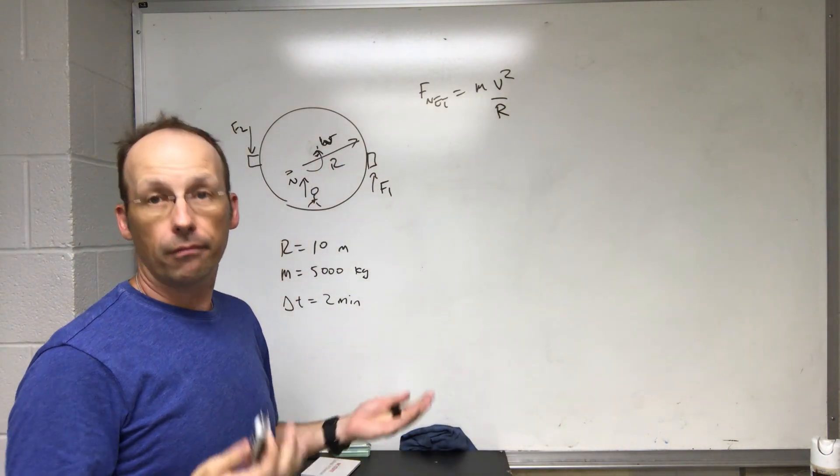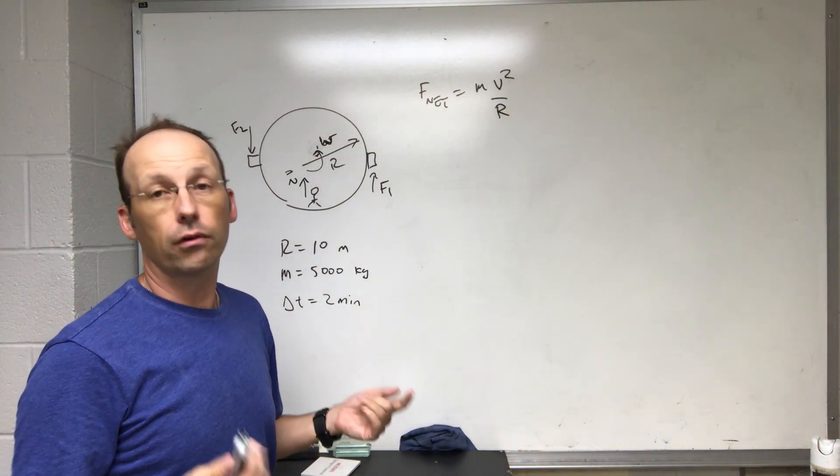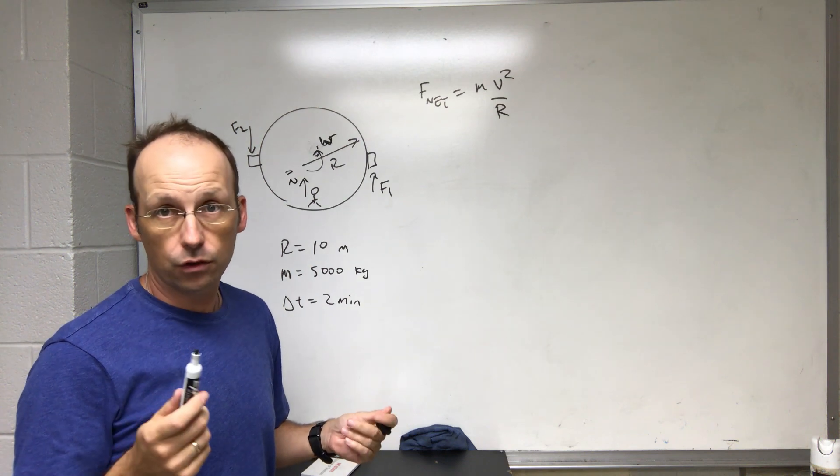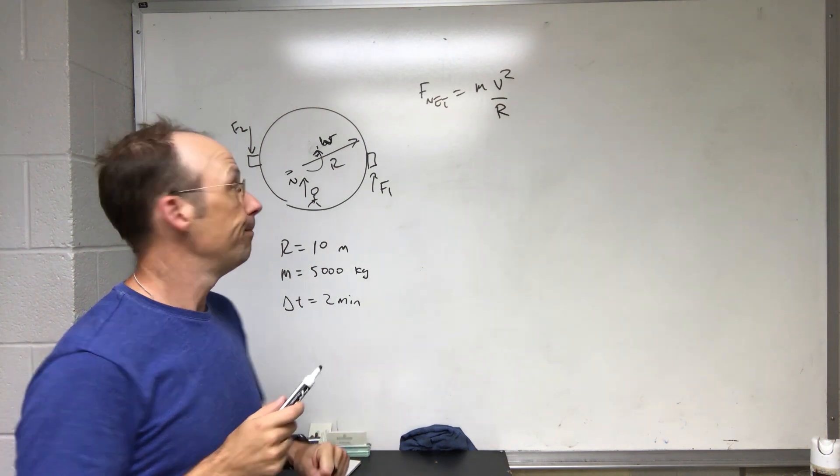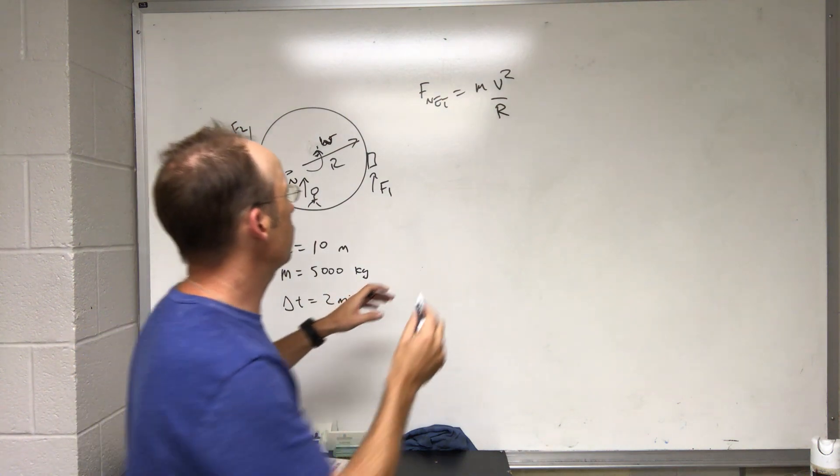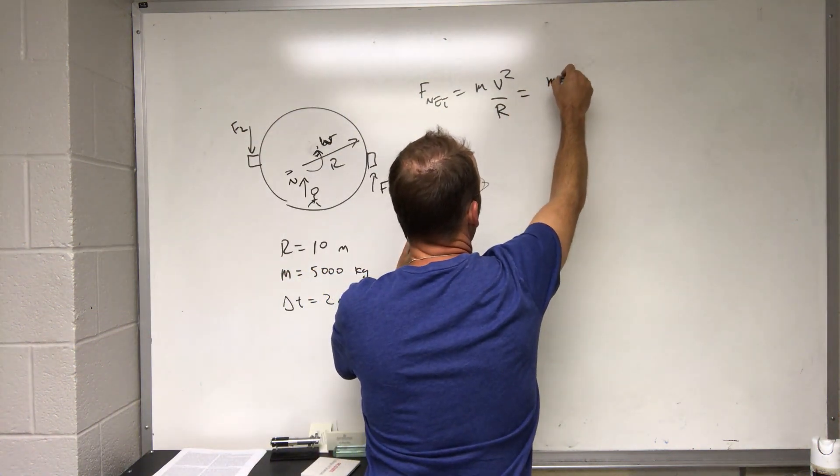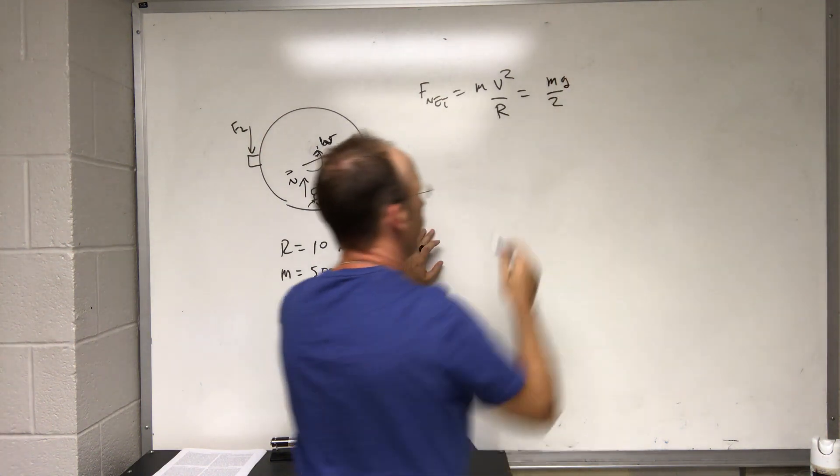F net equals m v squared over r. That's the normal rule I use for acceleration towards the center of the circle, for moving in a circle v squared over r. And this is going to be equal to the normal force which is going to be mg over 2, so it's half of weight.